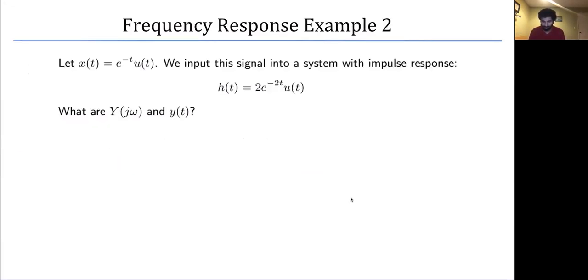Here's another example. Let x of t equal e to the minus t times u of t — this is your causal exponential. Put this into a system with impulse response 2 times e to the minus 2t times u of t. We're going to compute the output y of t by first computing its Fourier transform using the convolution theorem, then taking an inverse Fourier transform.